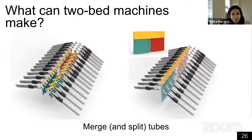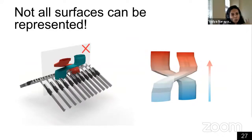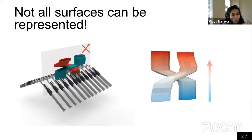By merging and splitting tubes we can make just about any 3D shape — but how general is this exactly? With just two layers, not all surfaces can be represented. For example, the picture on the slide shows a surface that cannot be constructed on this two-layer knitting machine: you have a green tube and a red tube occupying needles on both layers, and they want to swap spaces. Because we don't have enough needles to execute the swapping, this particular output cannot be constructed on this machine.